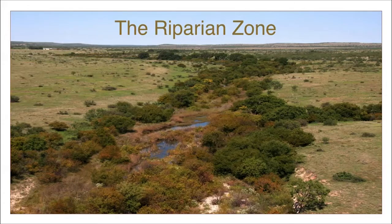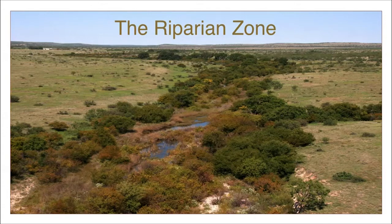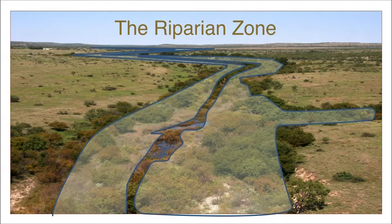Let's make sure we have a common understanding of what riparian means. This is a term that has really only come into common usage in Texas in the past 10 to 15 years, even among land management professionals. A riparian area or zone is the part of the landscape that flanks rivers and streams, shown in blue on this picture.